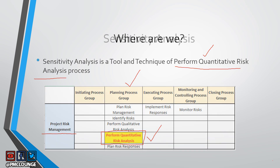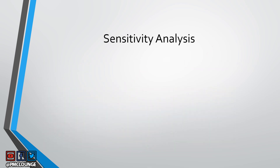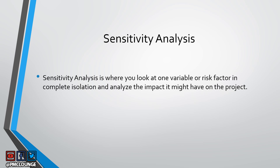Let's define sensitivity analysis. This is where you look at one variable, or just one risk factor, in complete isolation. For your project, you have a list of risks — a list of risk factors that might impact your project. When doing sensitivity analysis, you look at only one risk factor or variable in total isolation. That means you consider just one risk and assume the rest of the project will go as per plan, then analyze the impact of this one risk factor on your project.